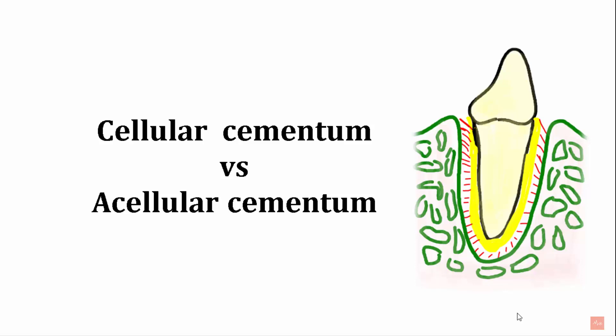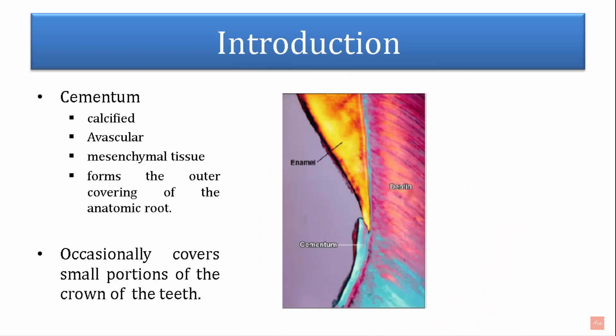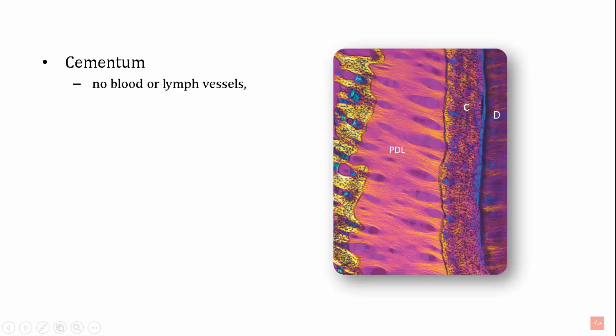Welcome back to class. Today we shall learn about the different forms of cementum and the difference between cellular and acellular cementum. Cementum is a calcified tissue — it is avascular and has a mesenchymal origin. It forms the outer covering of the anatomic roots. Cementum can occasionally cover small portions of the crown, overlapping the enamel at the CEJ, as seen in the image.